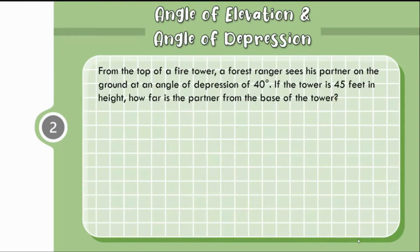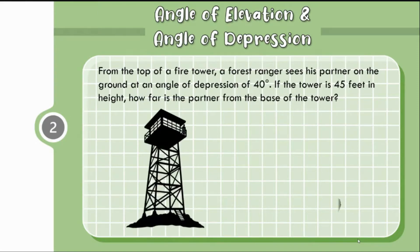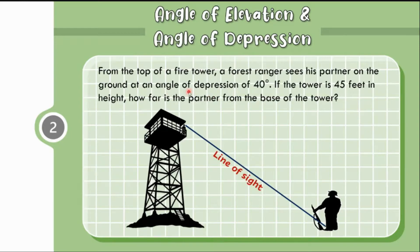From the top of a fire tower, a forest ranger sees his partner on the ground at an angle of depression of 40 degrees. If the tower is 45 feet in height, how far is the partner from the base of the tower? Let us illustrate this situation. We have here the fire tower and the partner of the forest ranger. The forest ranger sees his partner at an angle of depression of 40 degrees, so this will be the line of sight, with the angle of depression below the horizontal line. The horizontal line is at the ranger's position, and the angle formed there is 40 degrees.